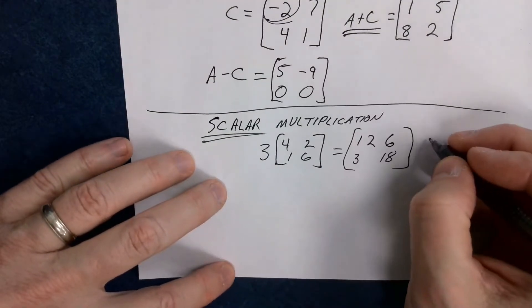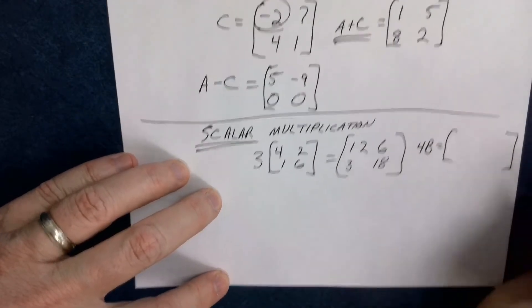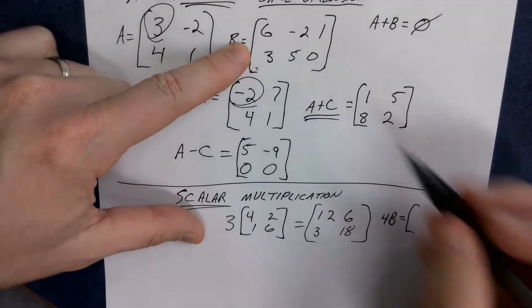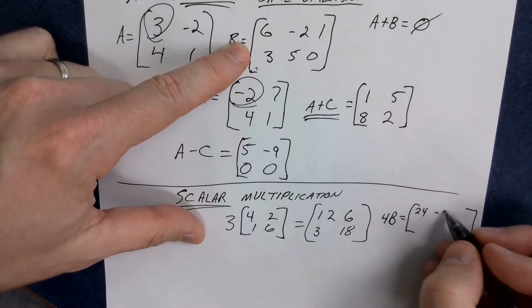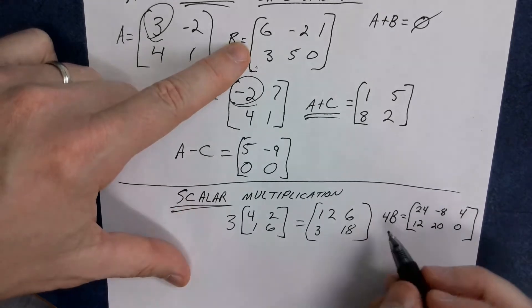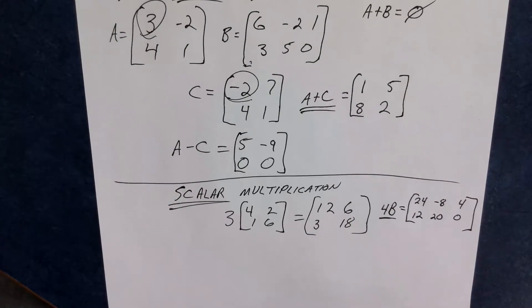Likewise, if I did this as, say, 4B right up here, and B was this one right up here, like we had before, 4 times 6 is 24. 4 times negative 2 is negative 8. 4 times 1 is 4. 12, 20, and 0. So it basically just takes anything and multiplies the entire stuff to it. And we're going to talk later on about how addition of matrices gets affected in video games. Scalar multiplication, how you can do that with businesses. Geometric transformations. All kinds of different things.